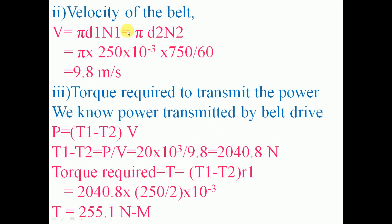Second part: Velocity of the belt. The velocity is given by v = π × d1 × n1 = π × d2 × n2. Here d1 is the diameter of the motor shaft pulley and n1 is the speed of the motor shaft. Substituting: v = π × 250 × 10⁻³ × (750/60), converting rpm to rps to get velocity in meters per second. Therefore v = 9.8 meters per second.